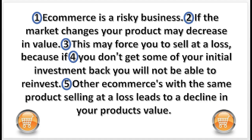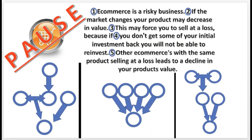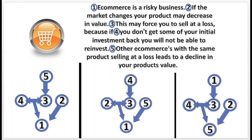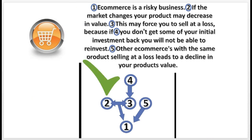Here's the first practice problem. Select the correct diagram for the argument, then press pause. Here is the correct answer. Next, choose the correct sequence of statements in the argument and press pause. That's the correct answer. Notice that 2 and 3 support 1 conjointly, 5 supports 1 independently, and 4 supports 3.